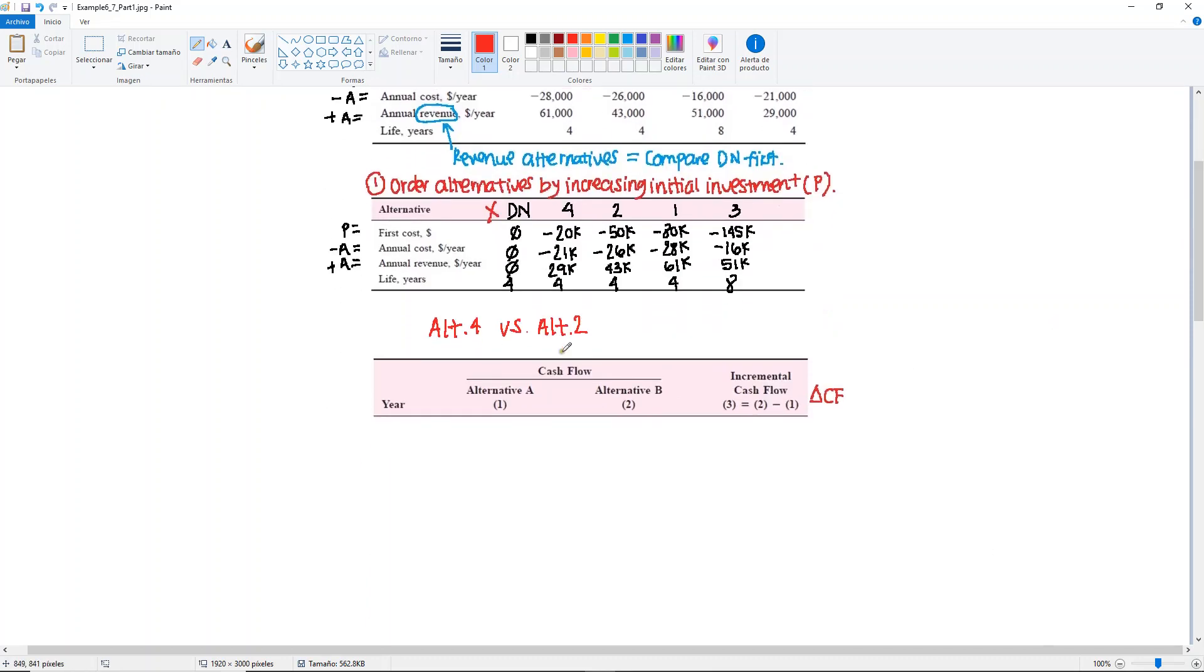Alternative 4 is the one with the least investment, so it will be alternative A, and alternative 2 will be alternative B because of the higher investment. We continue to have equal lives, that's a good thing, so we're going to do the short version of the table. You may refer to example 4 from chapter 6 if you want to go back to the procedure and the rules. Here we have year 0 and years 1 through 4, and just note here again that this is for equal lives.